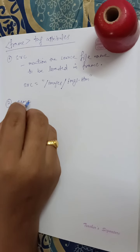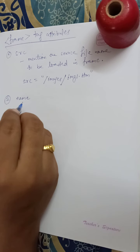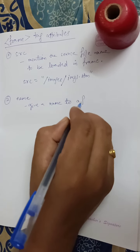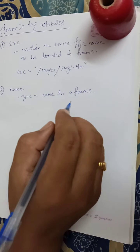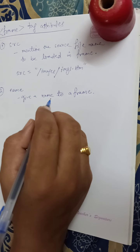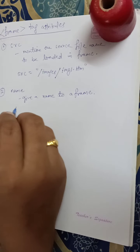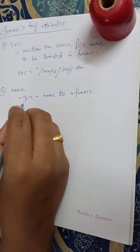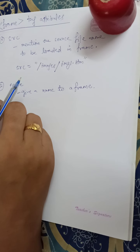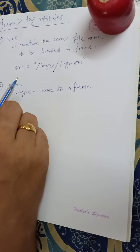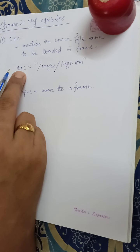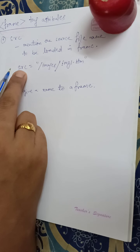Another attribute is 'name'. This attribute allows you to give a name to a frame. It is used to indicate which frame a document should be loaded into. This is especially important when you want to create links in one frame that load pages into another frame. The second frame needs a name to identify itself as the target of the link. For example, if we click a link in frame 1, the page has to be loaded into frame 2, so the target of the link should be specified.